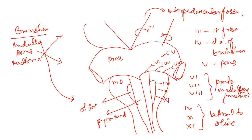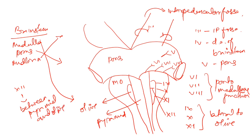Now, where does nerve twelve originate? Nerve twelve arises between the pyramid and the olive. So the twelfth nerve originates between the pyramid and the olive.